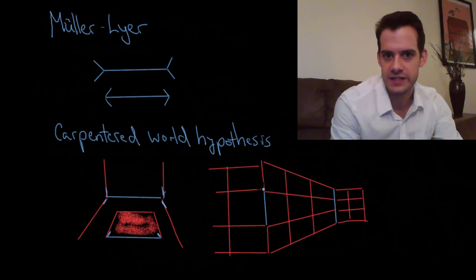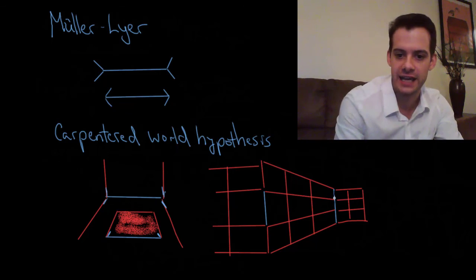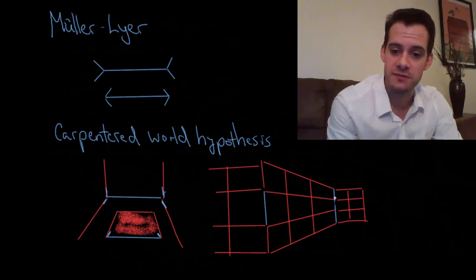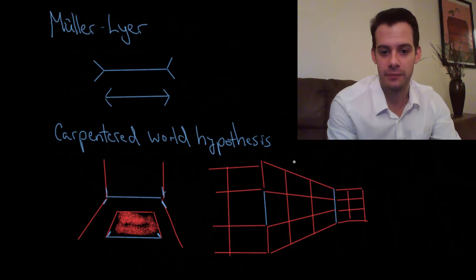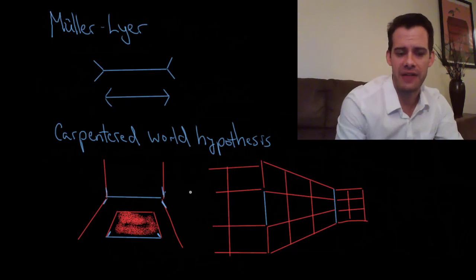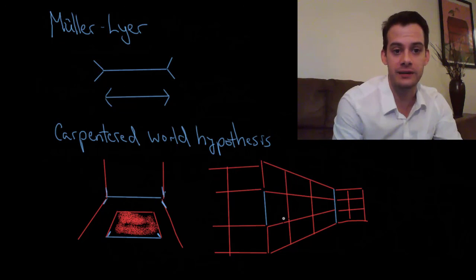You're so used to seeing this sort of situation in the world that you make assumptions that this one, even though it looks the same on my retina, this one's a lot farther away, therefore it must be bigger and therefore you start to see it as actually being bigger. So that's another demonstration of this carpentered world hypothesis for potentially explaining something like the Müller-Lyer illusion. It's very similar in that we have the lines that are sort of the inverted one and here's the sort of outward one and so that this would explain this Müller-Lyer illusion.